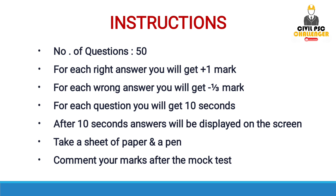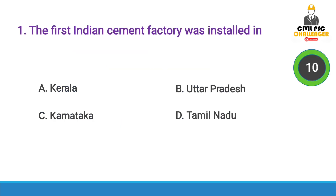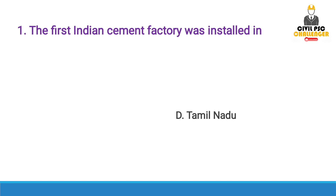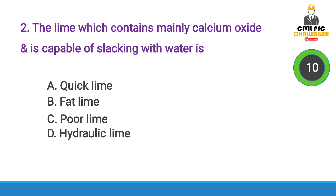The first question: The first Indian cement factory was installed in — Answer option D, Tamil Nadu.